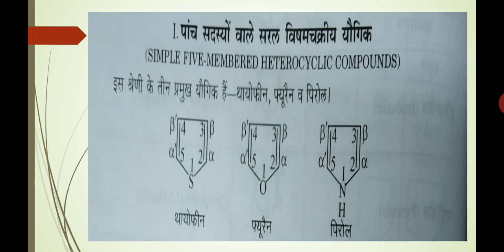Is series mein 3 main yogik aate hain: Thiophene, Furan aur Pyrrole. Jaise ki maine pichle lecture mein bhi aapko bataya tha, Thiophene mein Sulfur atom vishama atom ke roop mein hota hai, Furan mein Oxygen hetero atom ke roop mein present hai, aur Pyrrole mein Nitrogen hetero atom ke roop mein upasthit hai.